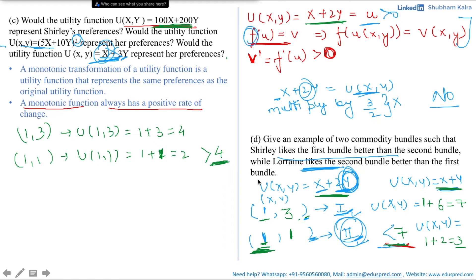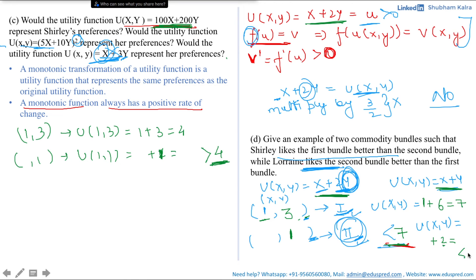Notice we now have a gap of 3 units to work with, unlike before where the gap between 'less than 3' and 'more than 2' was tiny. Let's change x in the second bundle since we've already fixed y at 1. We need x such that 2 plus x is less than 5 (to stay under 7) and 1 plus x is more than 4 (to exceed Lorraine's threshold of 4). So we need x to be more than 3 and less than 5. Let's choose x equals 4.